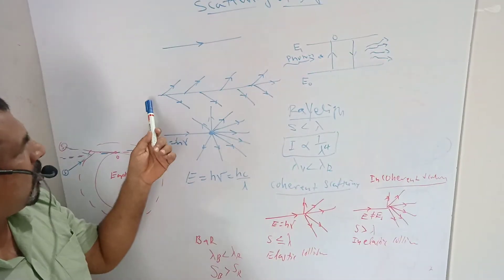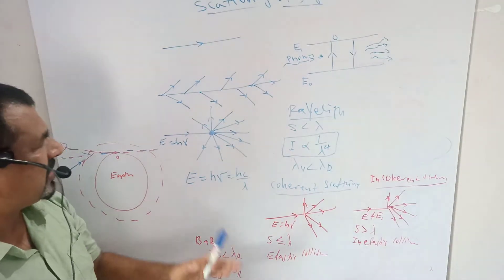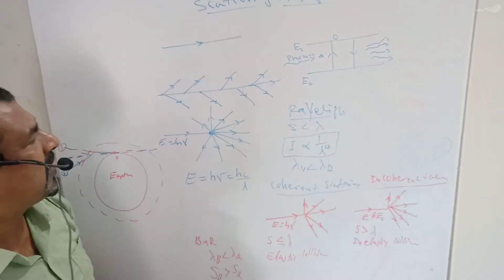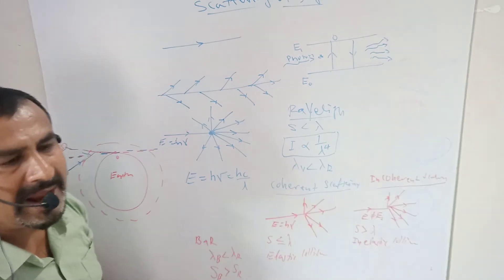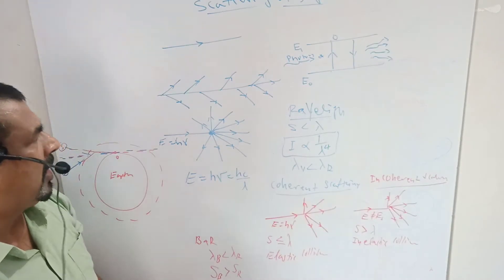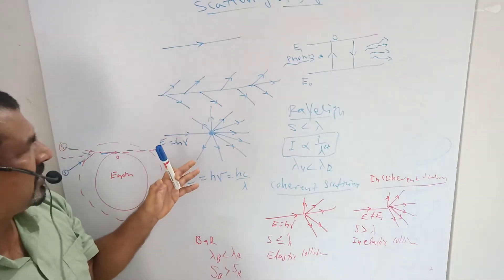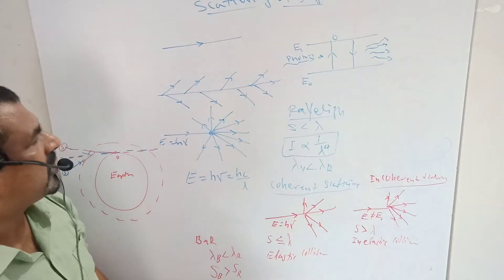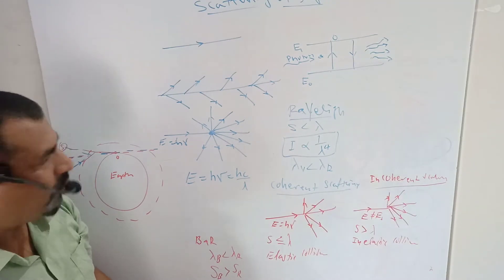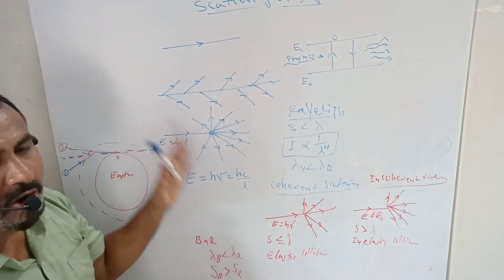In a non-homogenous medium, light travels in different directions along with the direction of propagation. So why does light travel in different directions in a non-homogenous medium?